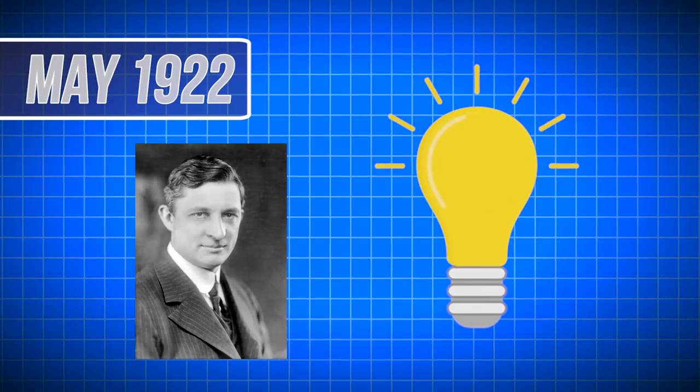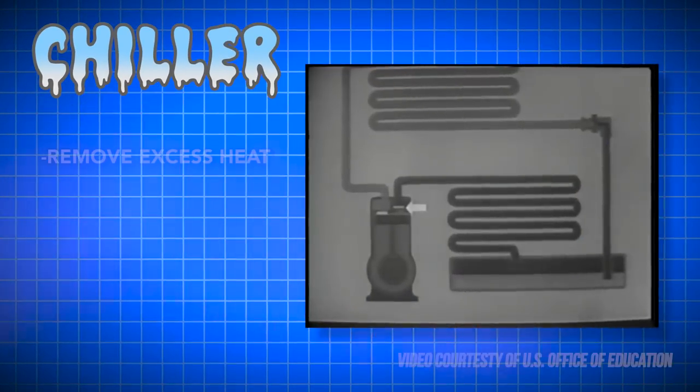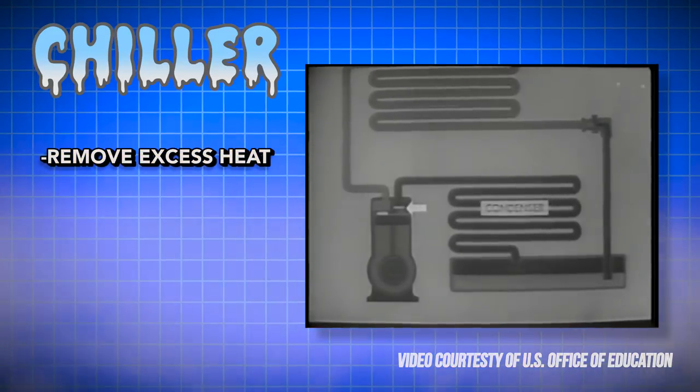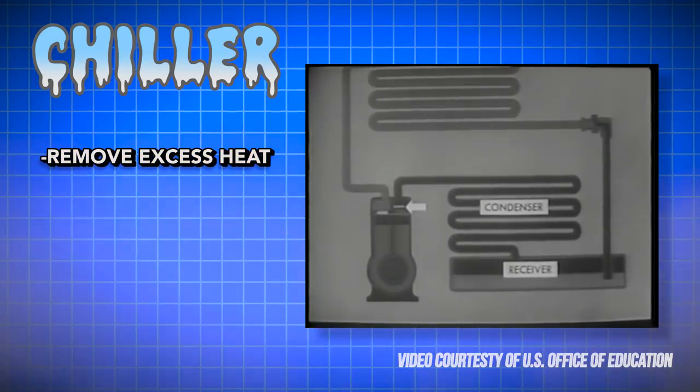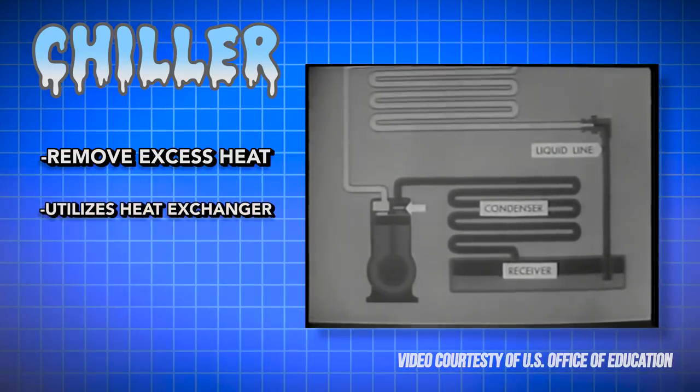In May 1922, Carrier reinvented the AC with the centrifugal refrigeration machine, or chiller. Chillers work to remove heat from liquid through a vapor compression cycle. This liquid containing the absorbed heat is then pumped through a heat exchanger to cool equipment or air.